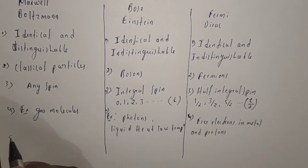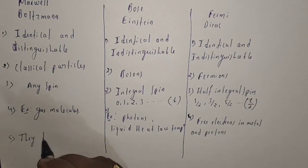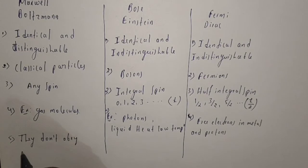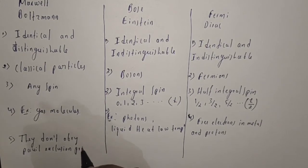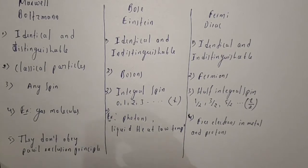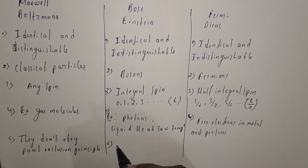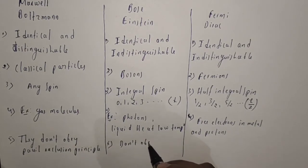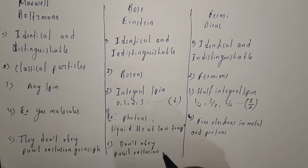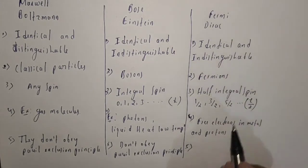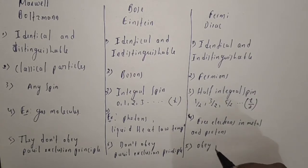The fifth comparison is about the Pauli Exclusion Principle. In Maxwell-Boltzmann Statistics, particles do not obey the Pauli Exclusion Principle. In Bose-Einstein Statistics also, particles do not obey the Pauli Exclusion Principle. But in Fermi-Dirac Statistics, particles do obey the Pauli Exclusion Principle.